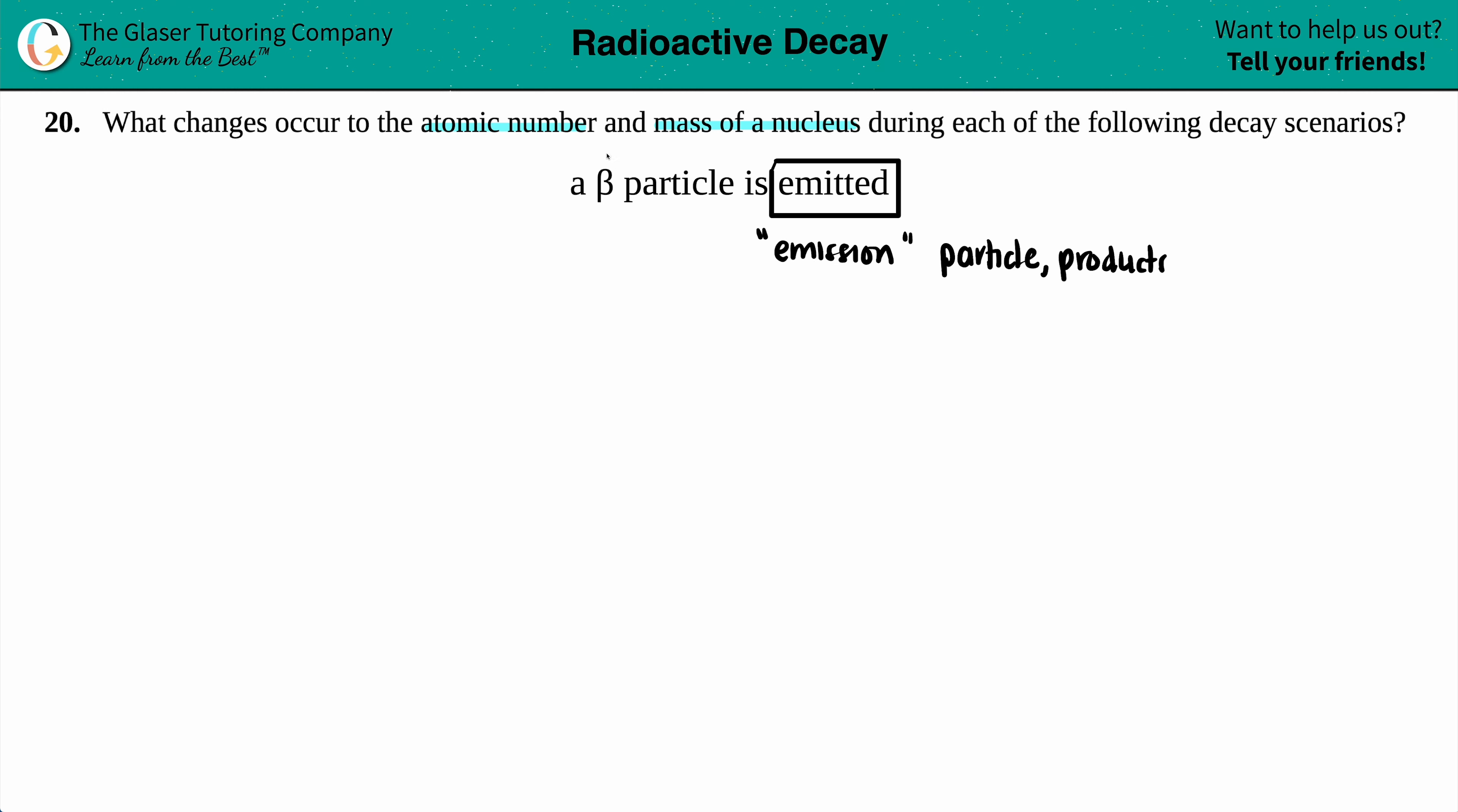So we know that this specific beta particle is going to be part of our products. So let's draw a little scenario here. So we now are going to do nuclei notation. So here's the three boxes right here. Whenever we're doing nuclei notation, we always do three boxes. And here is my beta particle.